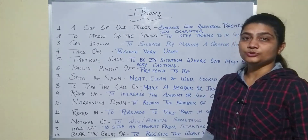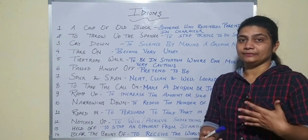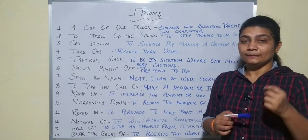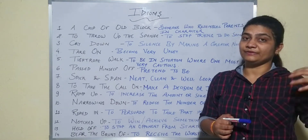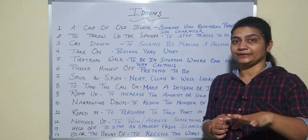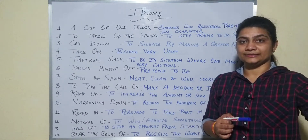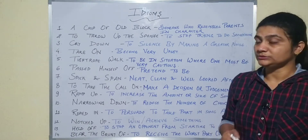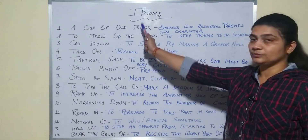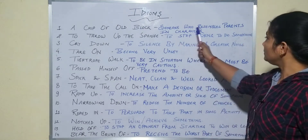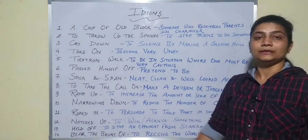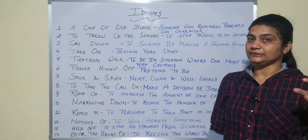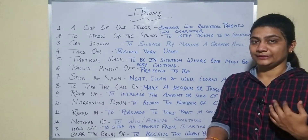'A chip of old block' means that when a kid resembles the parents in character or appearance. So in place of saying that, what you can use is 'a chip of old block' — someone who resembles parents in character and appearance. That means when a child resembles the parents.